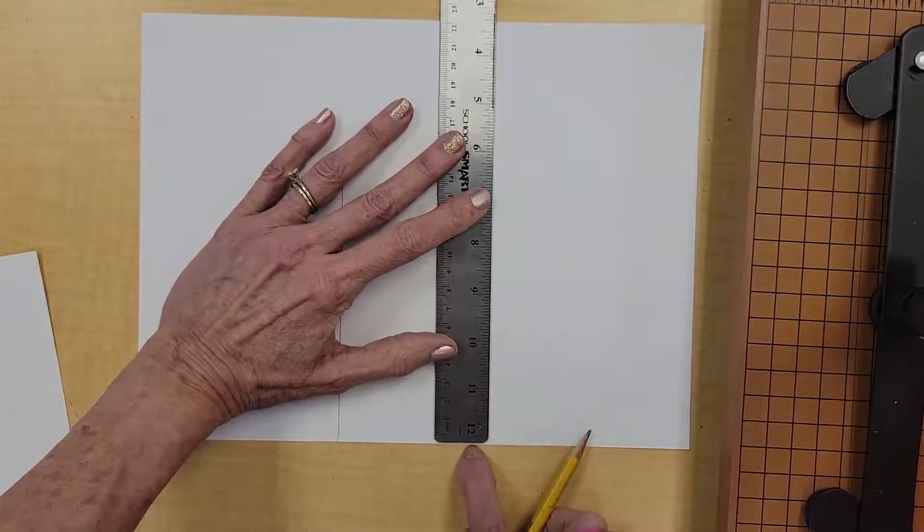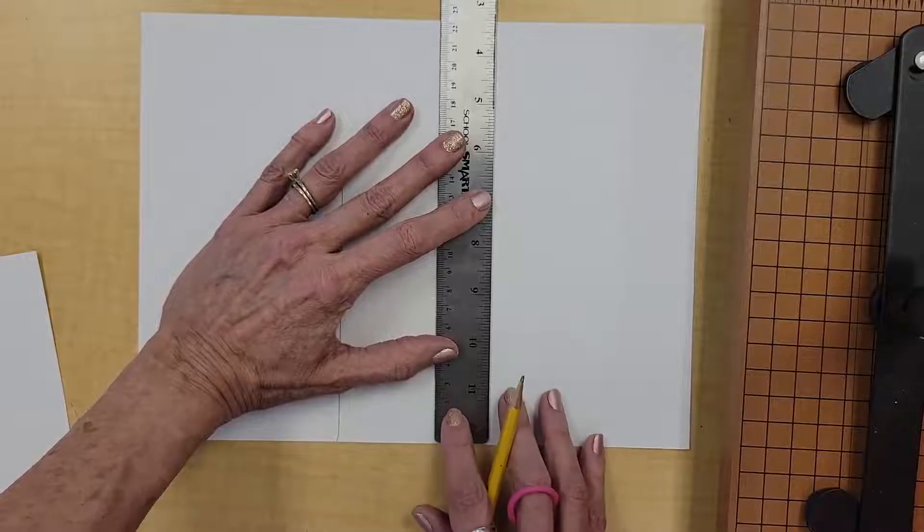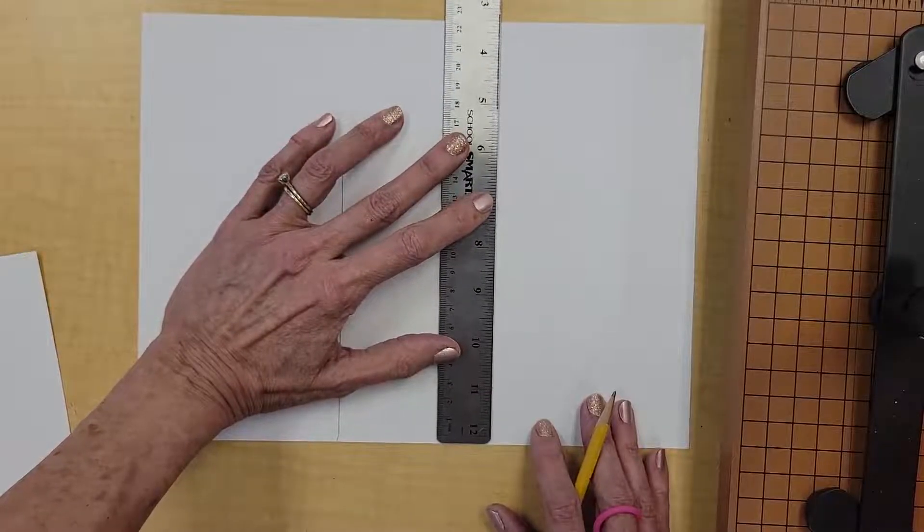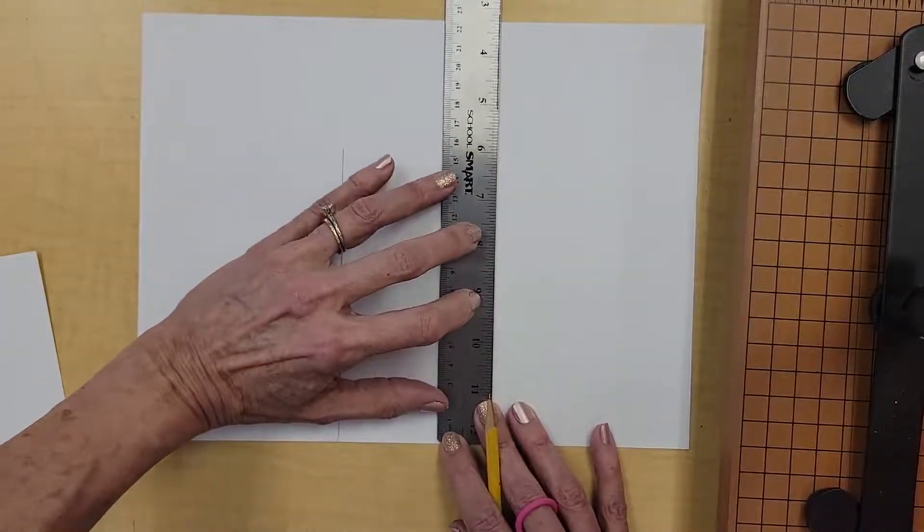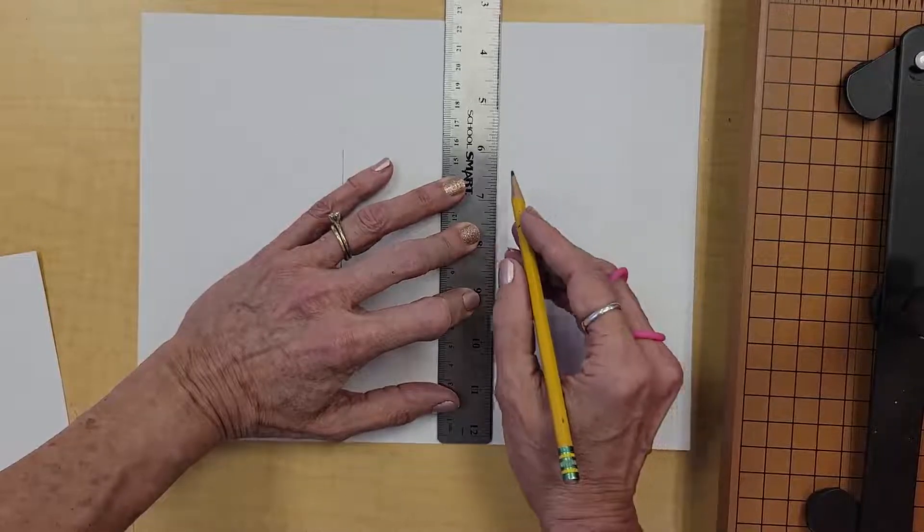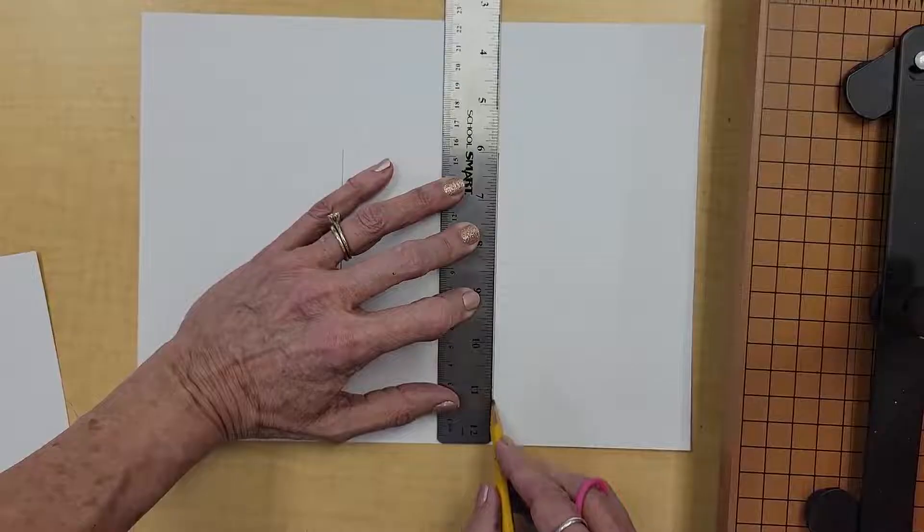Now I'm going to decide how wide I want that to be. Remember, I'm going to line up the bottom of the ruler with the edge of my paper so that I know my ruler is straight, not crooked. And then I'm going to take my hand and I'm going to hold my ruler down in place so it doesn't slip. And last time I started at the six, so this time I know I'm going to start in about that same place.